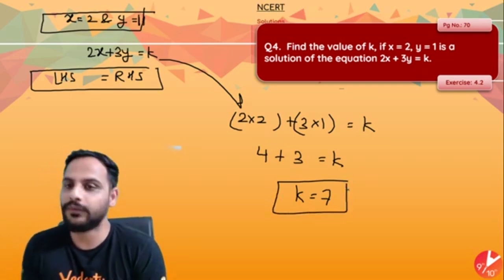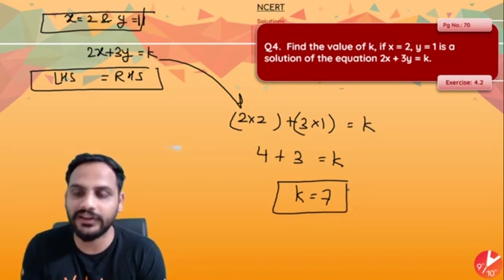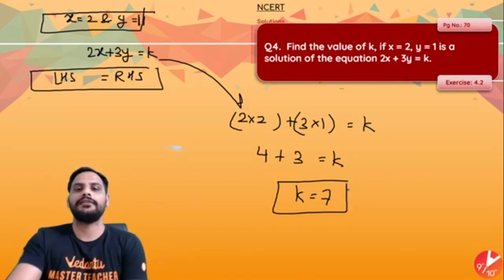Put x equal to 2, y equal to 1 in the given equation because since they are solution, they should satisfy. K is equal to 7 will be your answer.